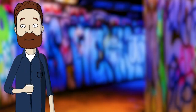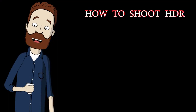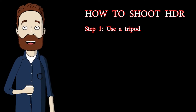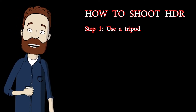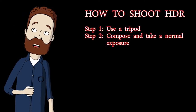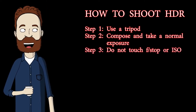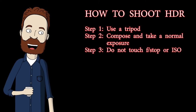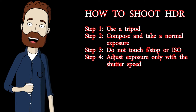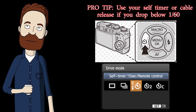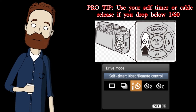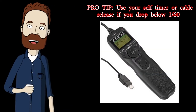How do you shoot an HDR multi-exposure shot? It starts in-camera and it's easy. First, lock your camera on a tripod — this is essential for proper image registration in the software later. Compose, set your normal exposure, and take the picture. Leave your f-stop and ISO alone; only adjust your exposure with the shutter speed. If you're dropping below 1/60th of a second, even on a tripod, use your self-timer or cable release to trigger the shutter, because pushing the button can cause vibrations that make your image slightly blurry.